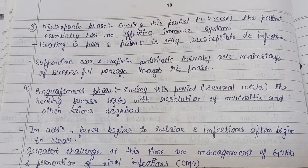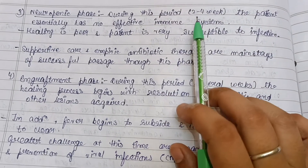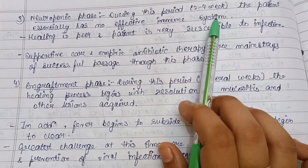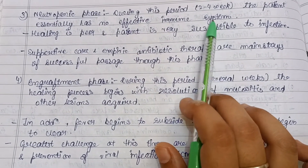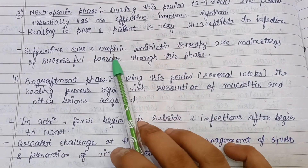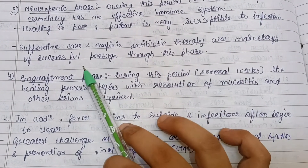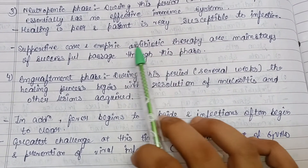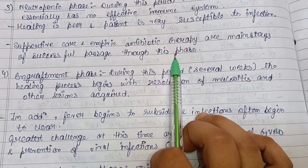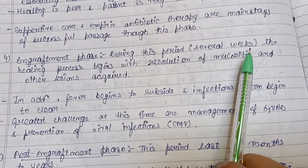The next phase is the neutropenic phase, lasting two to four weeks. During this period, the patient essentially has no effective immune system — healing is poor and the patient is very susceptible to infection. Supportive care and empiric antibiotic therapy are the main components for successfully passing through this phase.